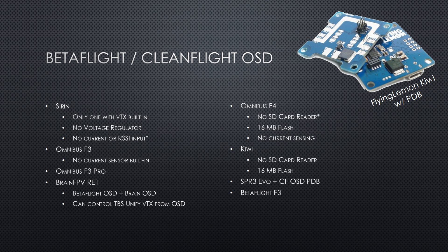The Brain FPV RE1 is an F4 board, which certainly makes it stand out, as are the Omnibus F4 and the Kiwi. The Brain FPV has the Brain OSD and can control TBS Unify video transmitter from its OSD. The Omnibus F4 does not have an SD card reader in the current version, though a version with an SD card reader is coming soon — currently it has 16 meg of data flash and no current sensing. The Kiwi does not have an SD card reader, but it does have 16 meg of data flash and current sensing. The SP Racing F3 Evo combined with the CleanFlight OSD and PDB has all of the above.